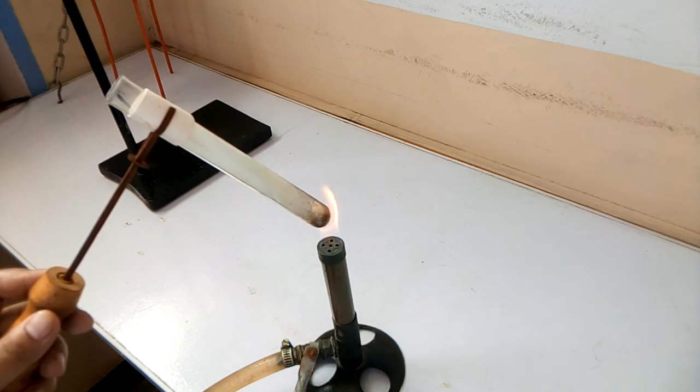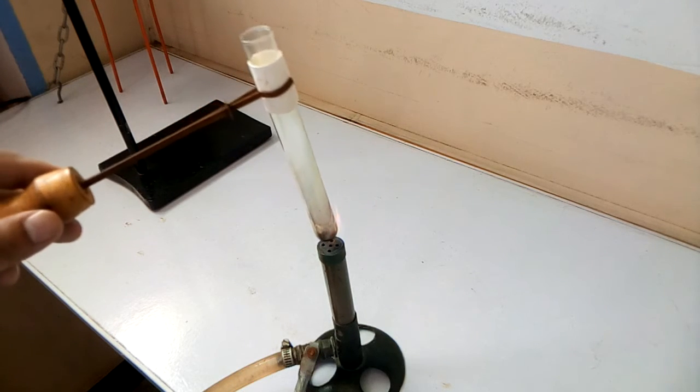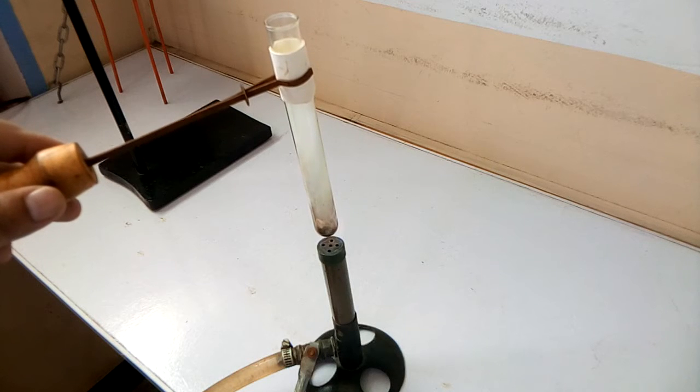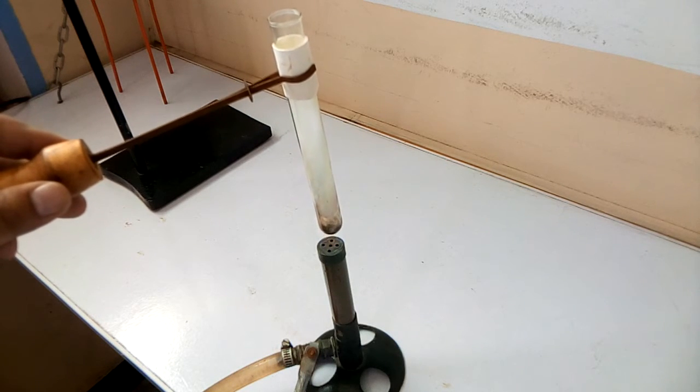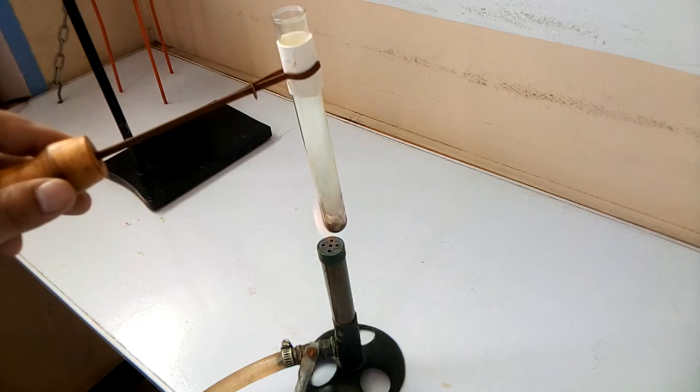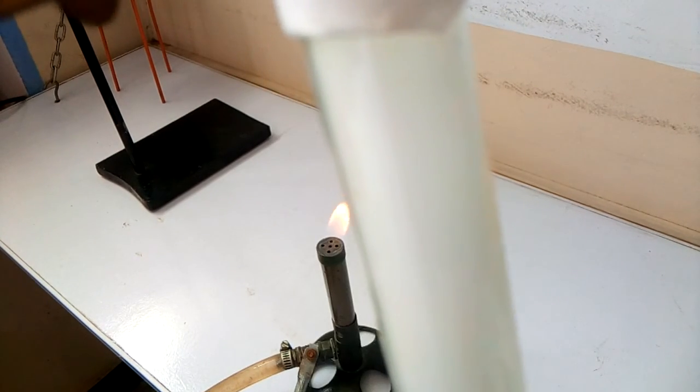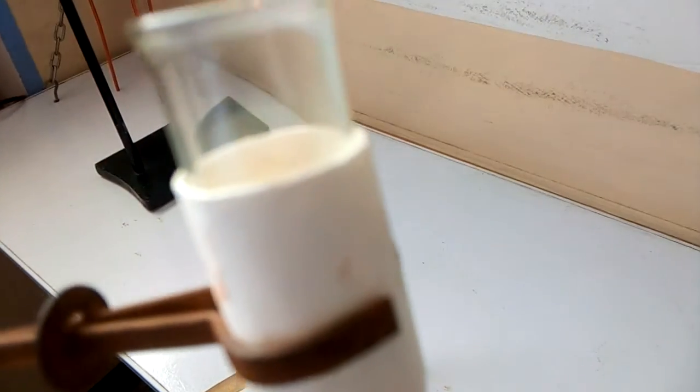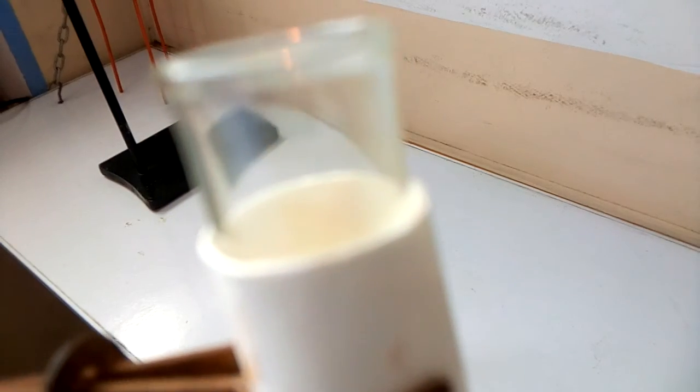White colored fumes can be seen easily inside the test tube. You can see a close-up of the white colored fumes inside the test tube. This is the empty end of the test tube.